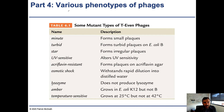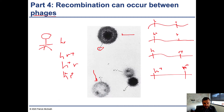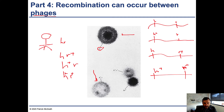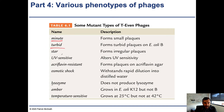There are various phenotypes of phages. Minute is the name of a phenotype where the phage forms very small plaques — the R gene controls the minute phenotype. Turbid refers to whether or not they form turbid plaques. Star refers to irregular plaques. UV sensitive refers to how sensitive they are to UV light. There is also resistance to acroflavin-containing agar.